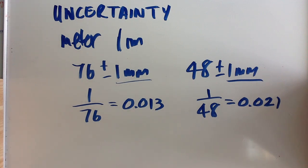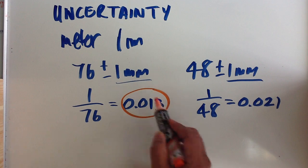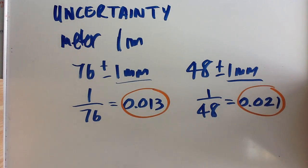This then is your relative uncertainty. So if you compare that to that, you can see the relative uncertainty in the reading of 76 is much smaller than the reading of 48.